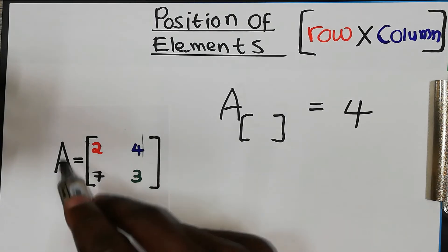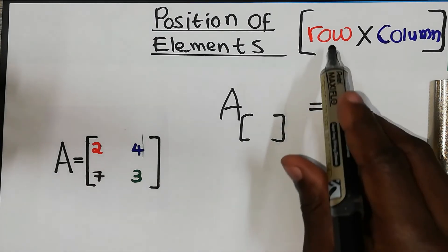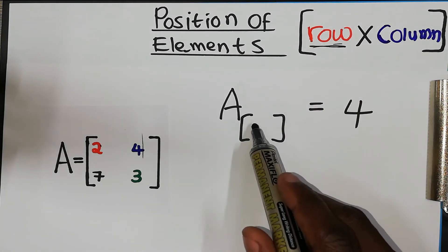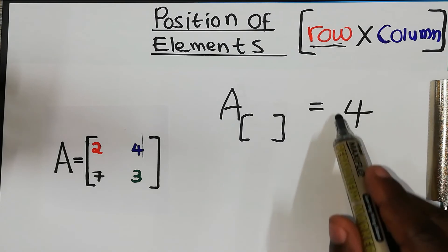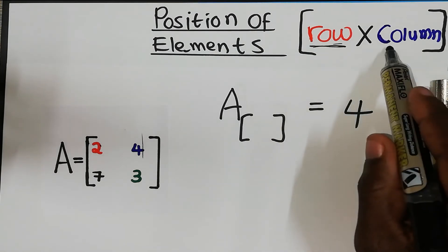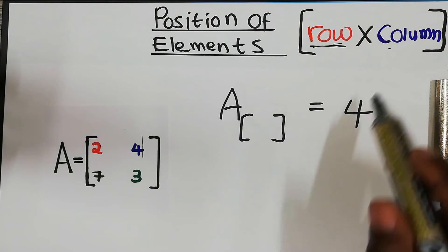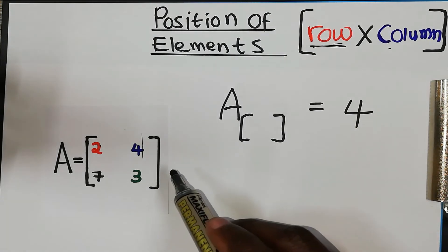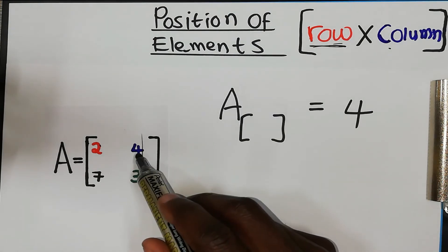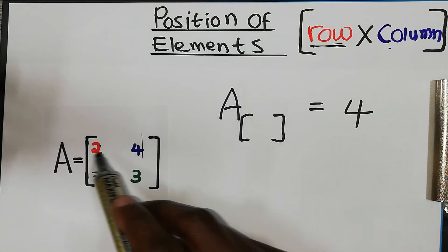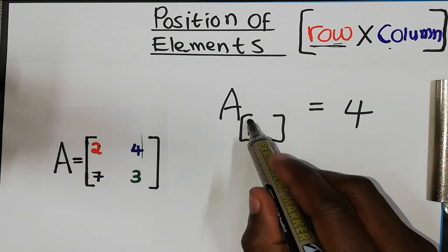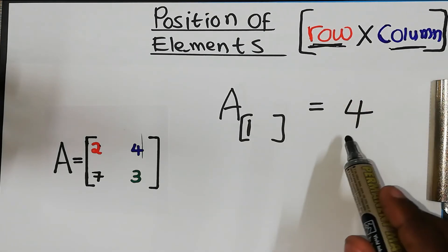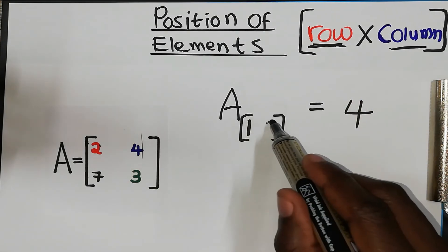The first number will represent the row where you find element four, and the second number will represent the column where you can find element four. Element four is here — which row is it in? It's on the first row, so you write one for the row. And which column is it in? It's in the second column, so you write two.